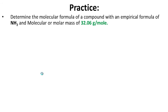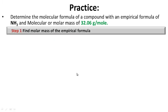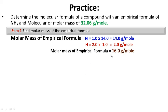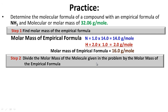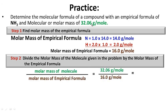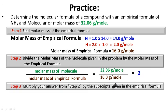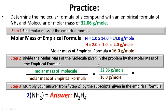Practice: determine the molecular formula of a compound with an empirical formula of NH2 and a molar mass of 32.06 grams per mole. Pause while you work; hit play when ready to see the answer. Step one: molar mass of NH2 — 14 + 2 = 16 grams per mole. Step two: 32.06 ÷ 16 = 2. Step three: multiply NH2 by 2, giving N2H4. Hopefully you got that right.